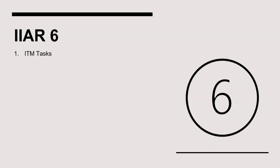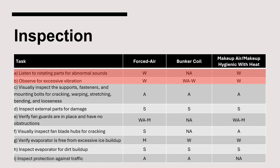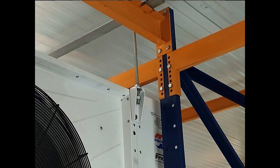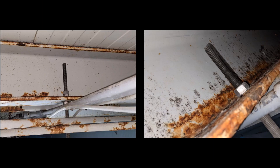Now let's turn our attention to the Inspection, Testing, and Maintenance (ITM) requirements for air cooling evaporators, contained in Chapter 9 of IIAR Standard 6. The first two required tasks are to visually inspect each air cooling evaporator weekly for abnormal sounds and vibration. This is a subjective inspection, so the inspector must have the experience to observe situations that require attention. Item C requires that supports, fasteners, and mounting bolts be inspected for deficiencies. Corrosion on support structures is another common deficiency that, when observed, must be addressed.